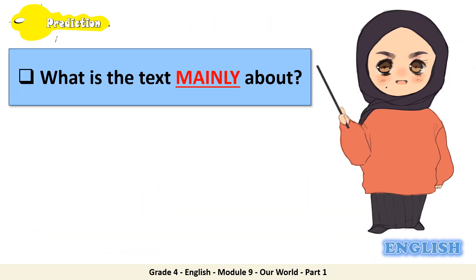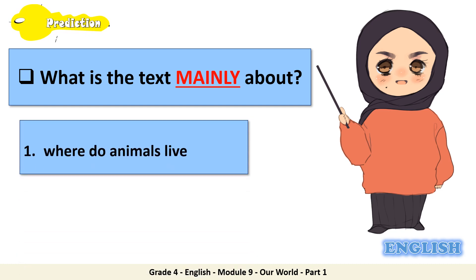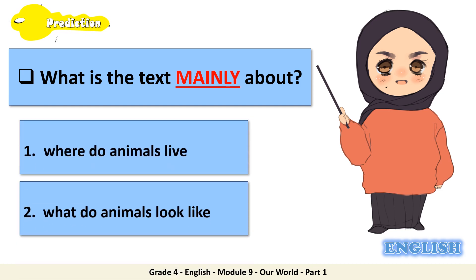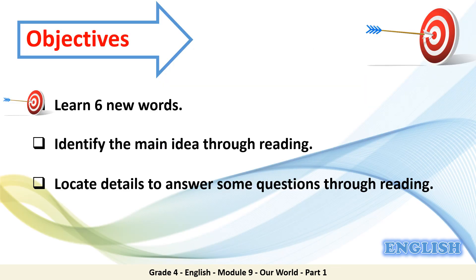Now you can easily answer: what is the text mainly about? The options were: where do animals live? Or what do animals look like? The answer is: what do animals look like? Great job everyone! You have completed your second objective.